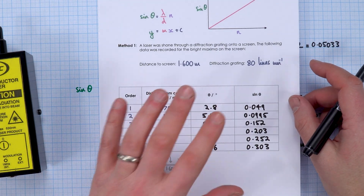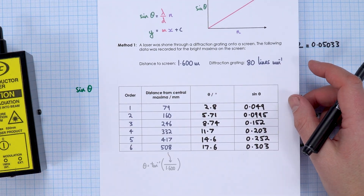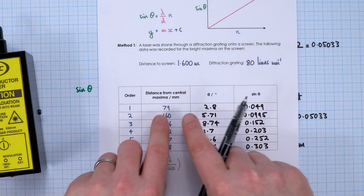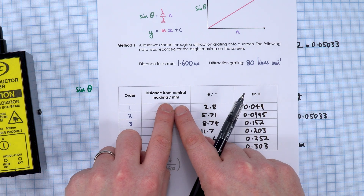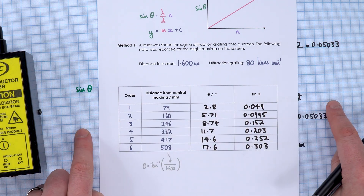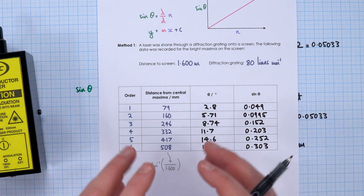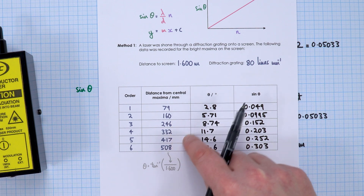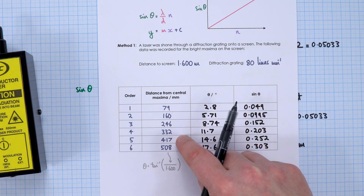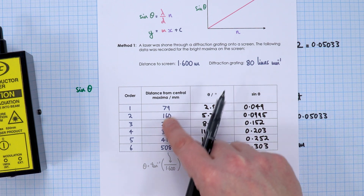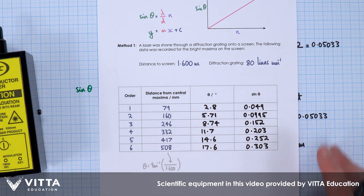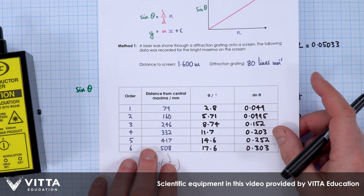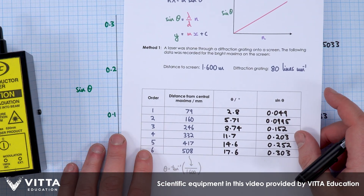So that was my analysis using this data. Compared to using a double slit, because the light is much more spread out on the screen and the spots we see are much brighter, it's much easier to have less uncertainty in these values, which should hopefully give us a better value for the wavelength of laser light.